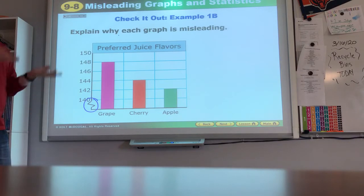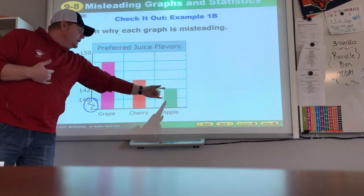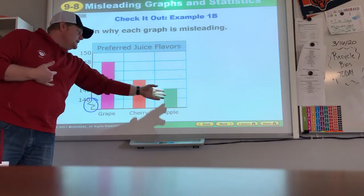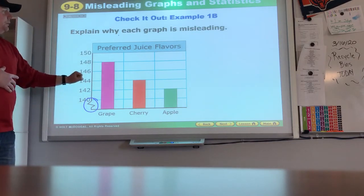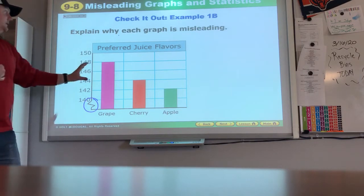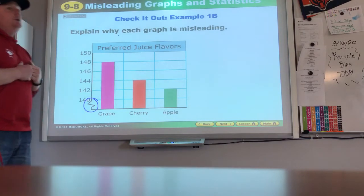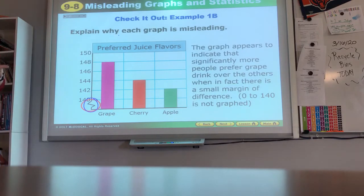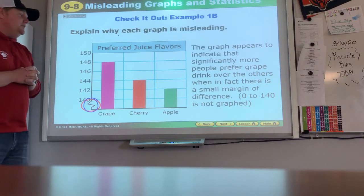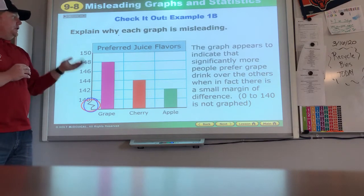If we would go all the way down and continue on, we'd see that those three graphs all grow and all are 140 plus. But here it looks like we have twice as many grapes as we have apples or even a little bit more because of this and we only show this top portion. We can make it look like there's many more of these than these when that is not really the case. The graph appears to indicate significantly more people prefer grape drink over others when in fact there's a small margin of difference.